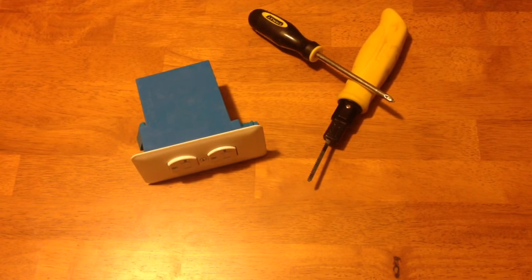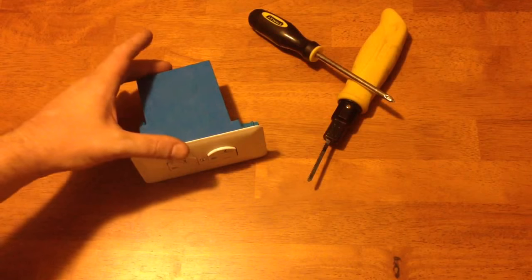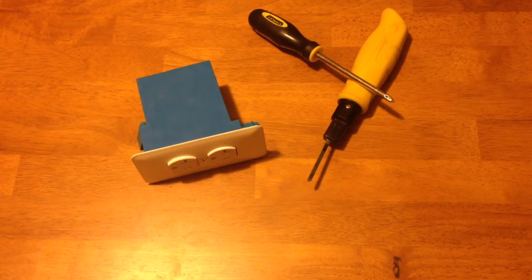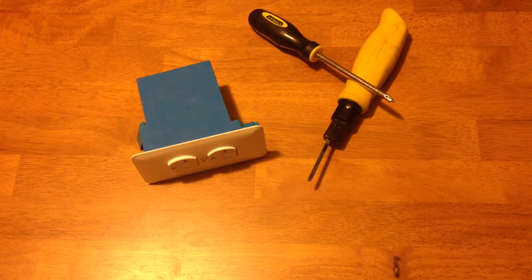That way it looks just like a normal plug to whoever's breaking into your house, but the work box can actually hold valuables, such as jewelry or money or whatever you have in it.